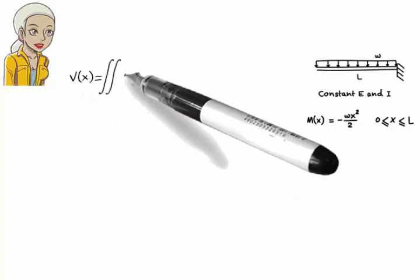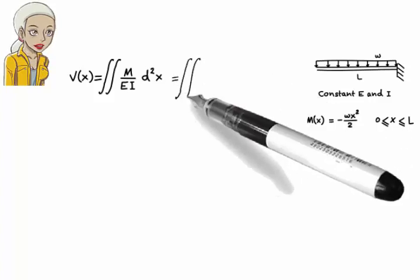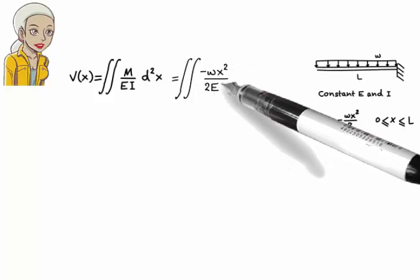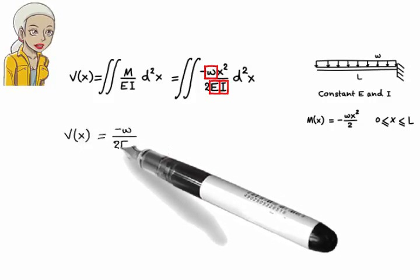Since v(x) equals the double integral of M over EI, I can write the deflection equation as v(x) equals the double integral of negative wx squared over 2EI. Okay, w, E, and I are constants. So, let's rewrite the equation like this.